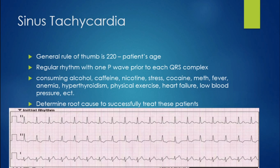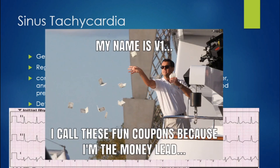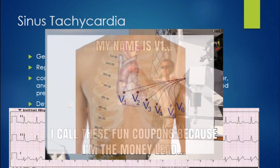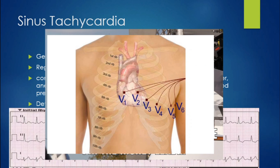When it comes to looking at atrial activity, the best lead is actually V1, not lead two. V1 is your money lead because of where it sits over the heart — it should be right over the SA node. This isn't a hundred percent, so always check the whole 12-lead for atrial activity or P waves, but always look in V1 first if you're having any trouble picking them up.